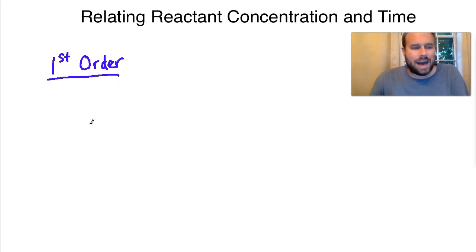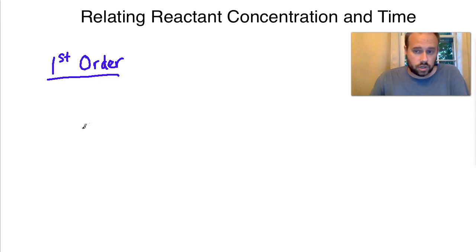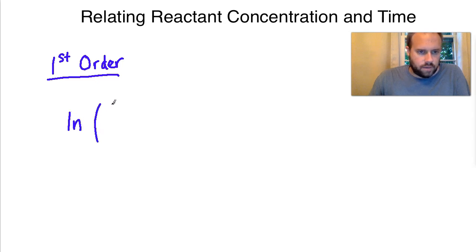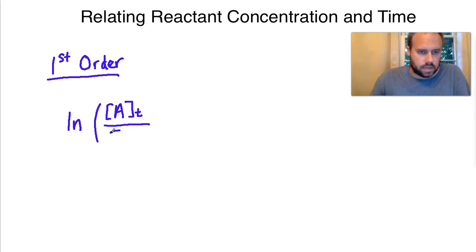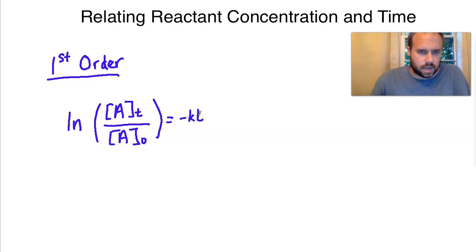For first order reactions, how can we relate time to concentration — specifically as we're looking at a change in concentration over time for two points? It turns out these can be related through a natural logarithm. If we take the ln of the concentration of A at time t over the concentration of A at the initial time (time zero), that equals the negative rate constant times time.